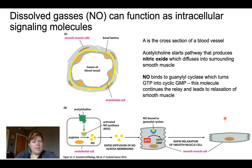Every piece of these signaling processes is highly regulated. We don't want signals to stay on for a long period of time — we want to make the change and turn it off. All these different pathways will have ways of turning them on and off, like light switches.